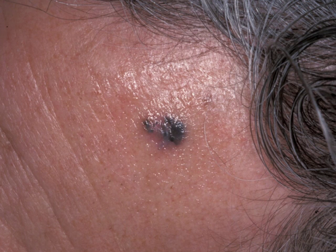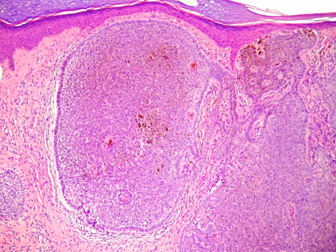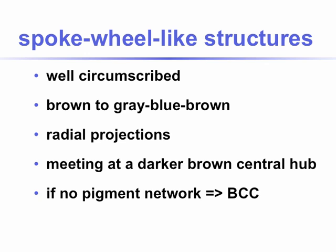Basal cell carcinoma on the forehead, clinically. Dermoscopically, we see in the right lower part a large, well-demarcated, blue-gray ovoid nest, no pigment network, no argument for a melanocytic lesion. This is very suggestive for a pigmented basal cell carcinoma. Here, the histopathological correlation showing very big and large pigmented tumor nests, corresponding to what we've seen before.